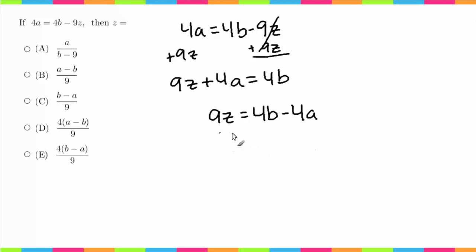Now I have to divide by 9 to get the z by itself. So I'm going to get z equals 4b minus 4a over 9.